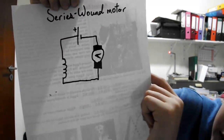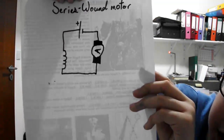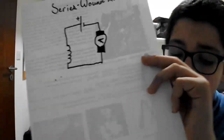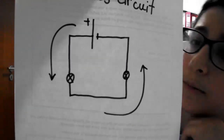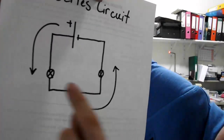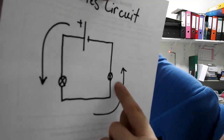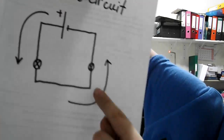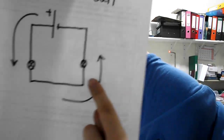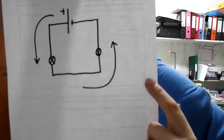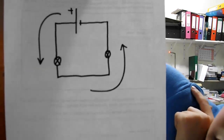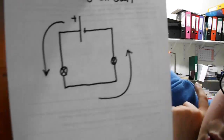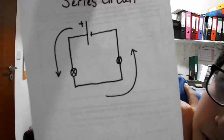I recall mentioning series circuits in the previous video, with this being the schematic. The two bulbs are connected on the same loop of the circuit, in series. Except in a series wound motor, bulbs are not used — we use windings.